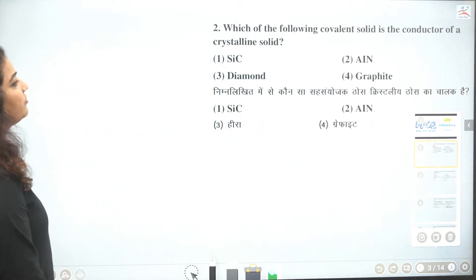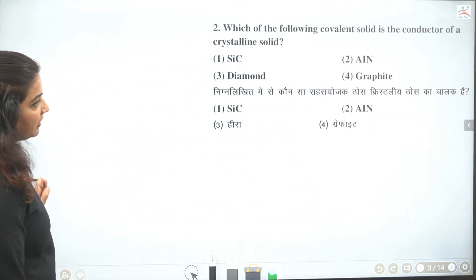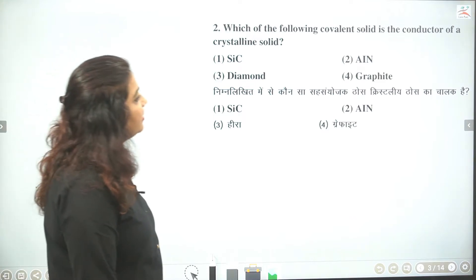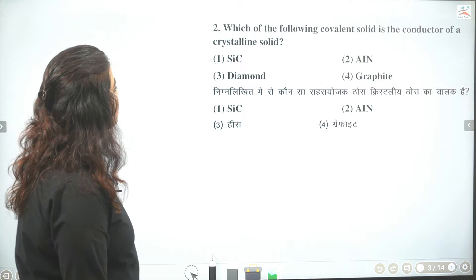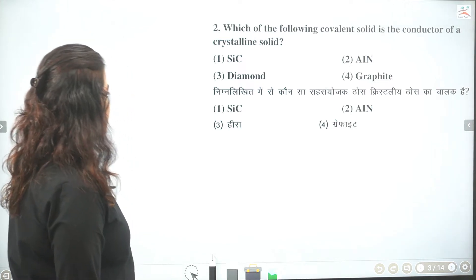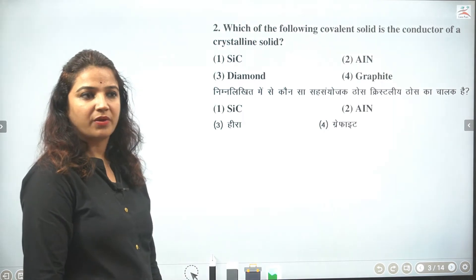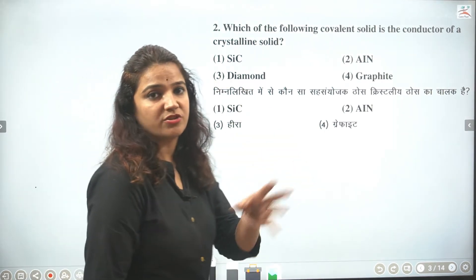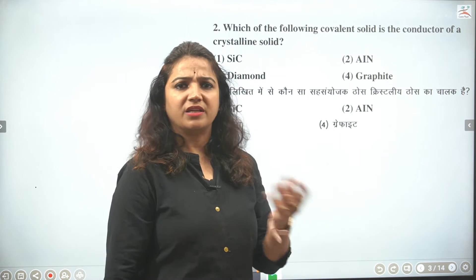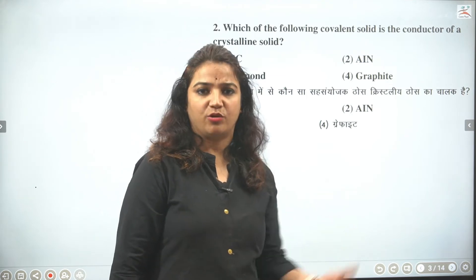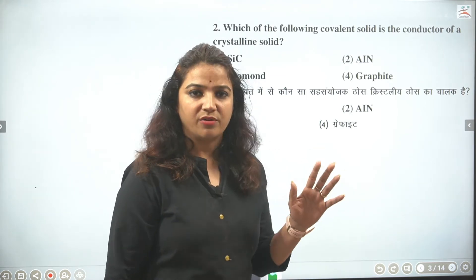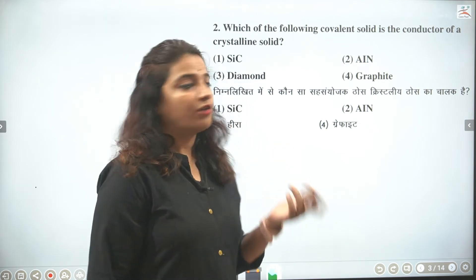So next problem we have which of the following covalent solid is the conductor of crystalline solid. Which of the following covalent solid is conductor of crystalline solid. Toh aapko aisa covalent solid jo conductor hai. Which means that it is a conductor. So we will say that it is a conductor in 3D. And generally covalent solid is insulator. So we will leave one. And who is it? So see.